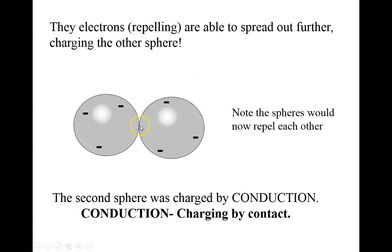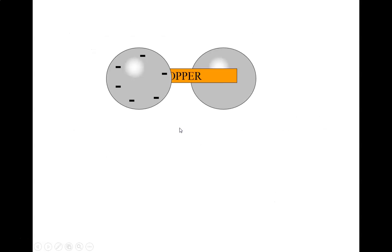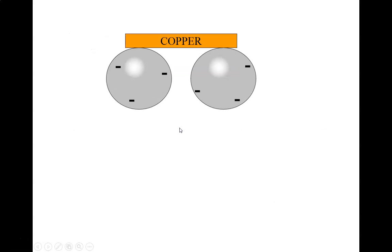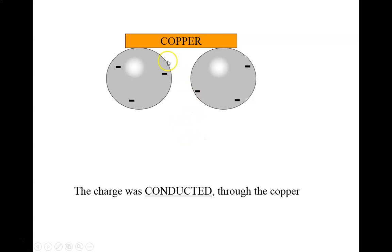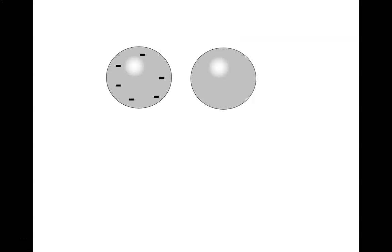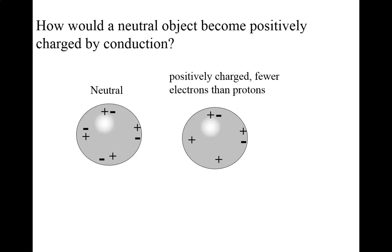These spheres would then repel each other and, if they were on strings, they would spread out. I can do the same thing if I use a conductor like copper to connect them — that also results in charging by conduction. But if I use a piece of glass, which is an insulator, the electrons will not travel through that, so no conduction. How would a neutral object become positively charged by conduction?